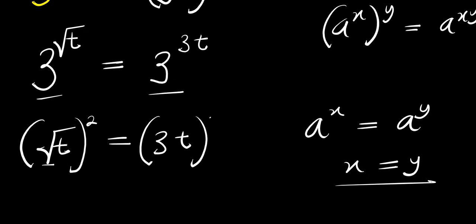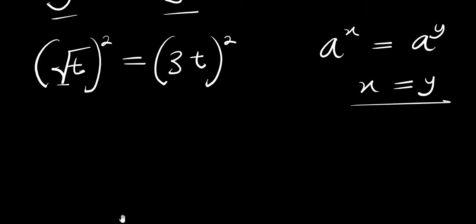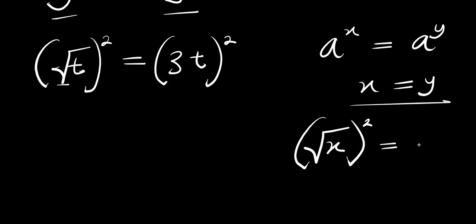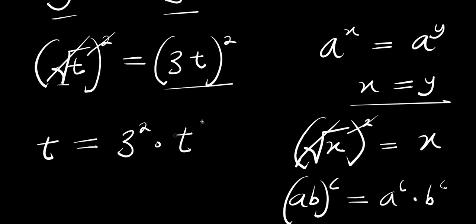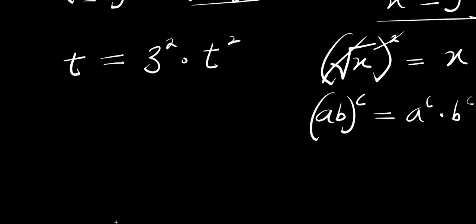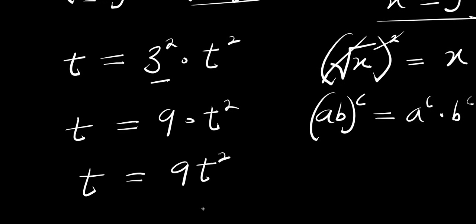So what we are going to do will be to eliminate the square root by taking the squares of both parts of this equation. If you have square root of x, power 2, this equals x, because the square root eliminates the square. So we have t equals — using the rule (a times b) power c equals a power c times b power c — we get 3 power 2 times t power 2, so t equals 9t squared.